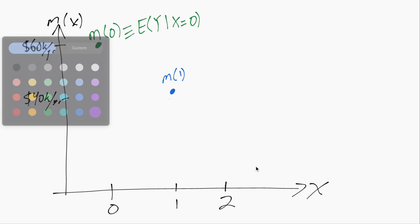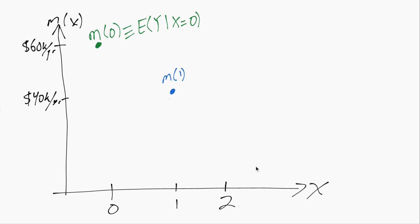And similarly, M(2) is the mean salary among individuals with two siblings. And we'll assume that that's also $40,000 per year.